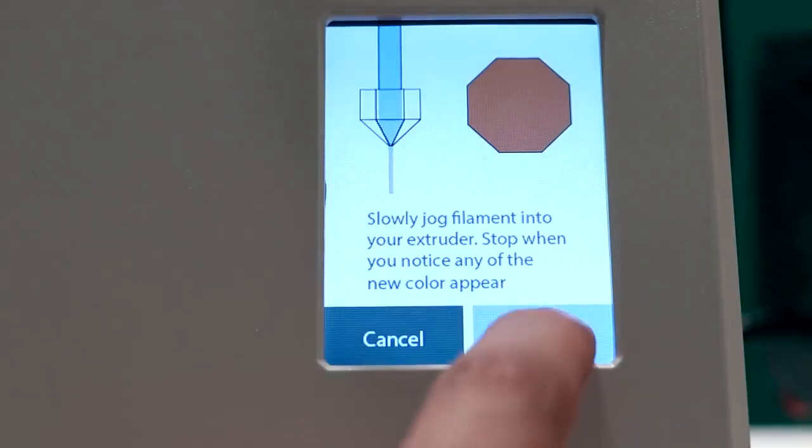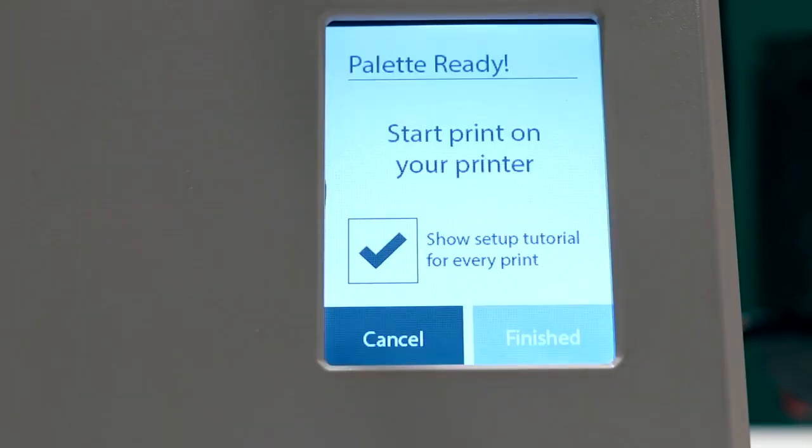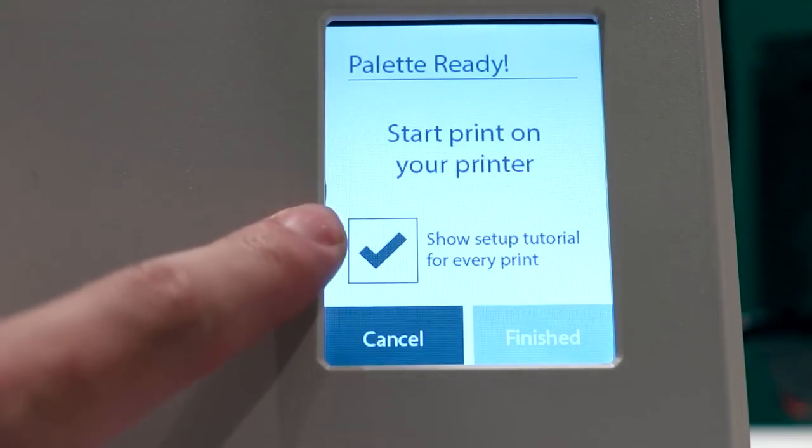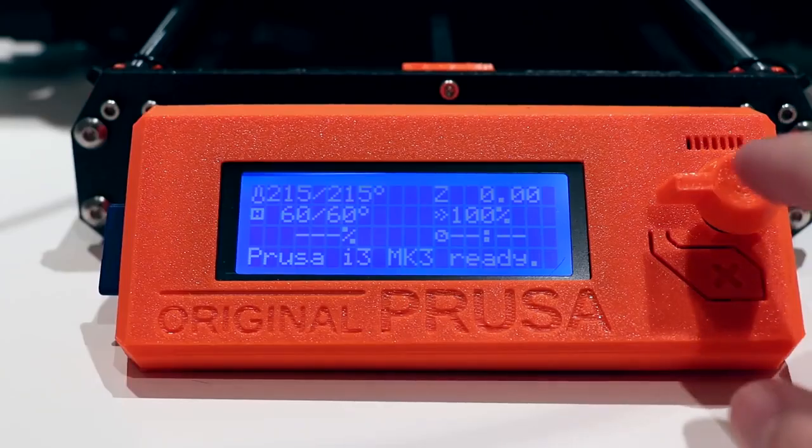Now hit next and you're done. Now the Palette 2 and the printer are calibrated. If we select next, we are then allowed to select whether or not we want the setup tutorial on every print, which you can turn back on at any point after loading a print. Or we can select finish to start our palette print.